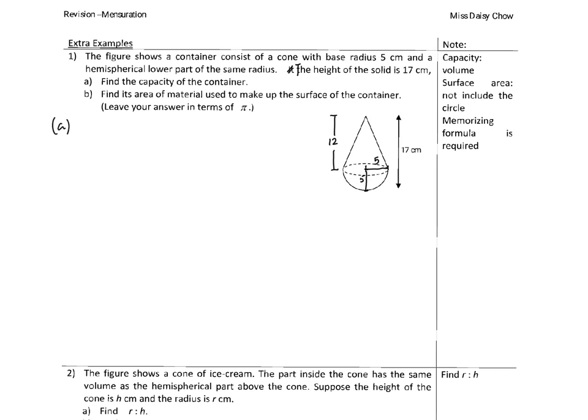For Part A, the question asks you to find the capacity, which is the volume of the container. The volume of the cone is 1/3 times the base area — that means 5 squared times π times the height 12. Then I add the hemisphere volume, which is 4/3 π r³ with r = 5, divided by 2.